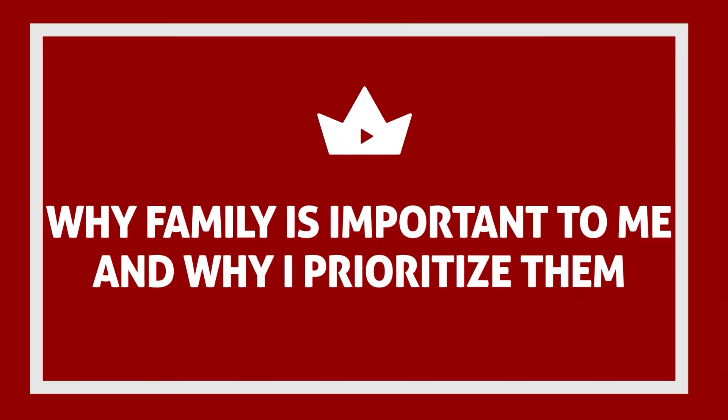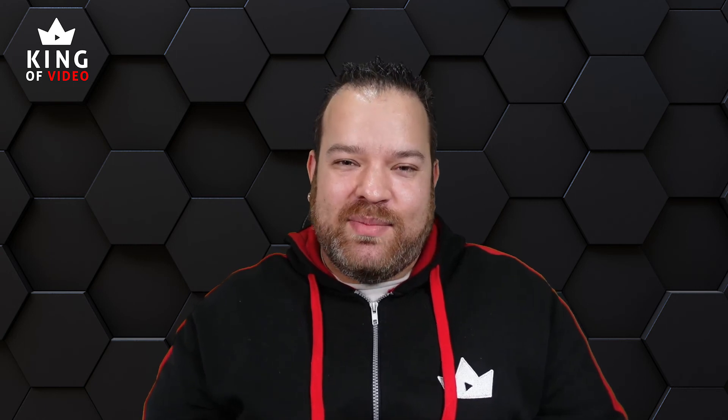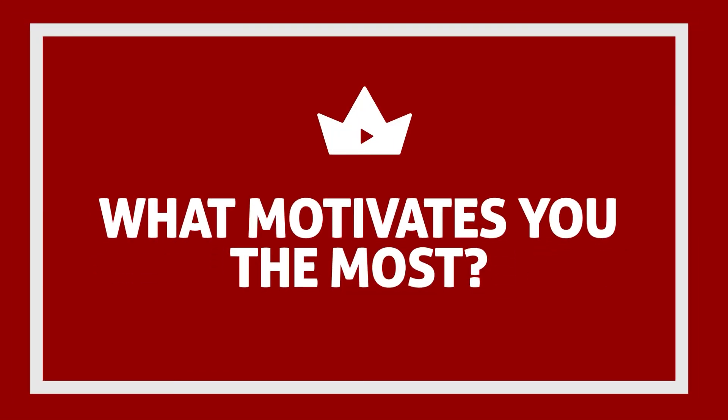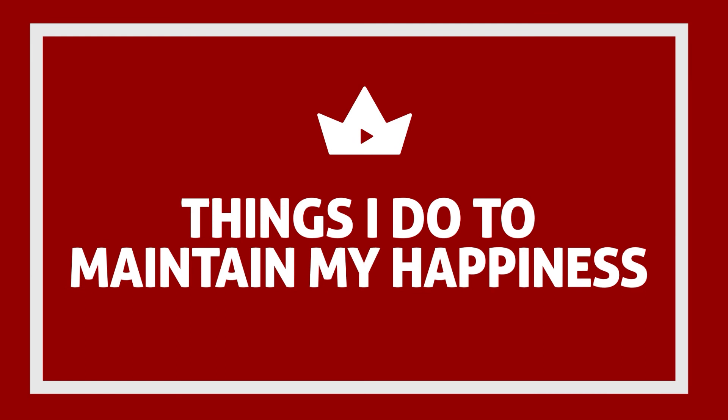Number twenty-eight: why family is important to me and why I prioritise them. Talk about what that means for your day-to-day business and your purpose in life. Number twenty-nine: what motivates you the most — it might be family or other things that keep you going, a purpose and passion for business or personal life. Number thirty: things I do to maintain my happiness. For me it's playing Xbox — it lets me chill out and keeps me happy.